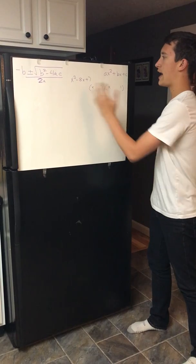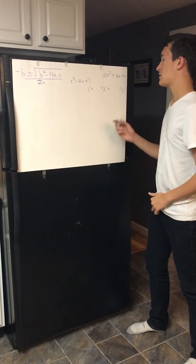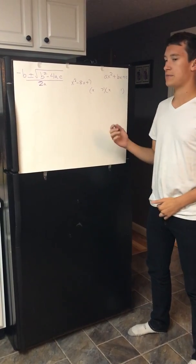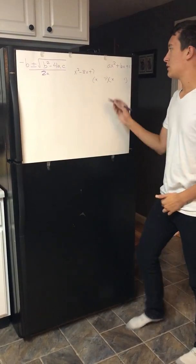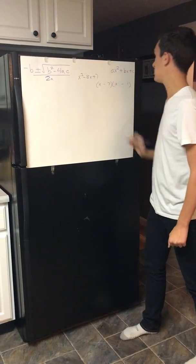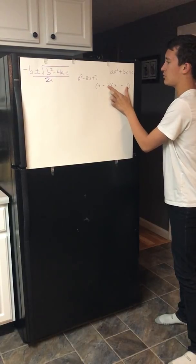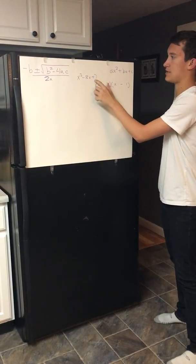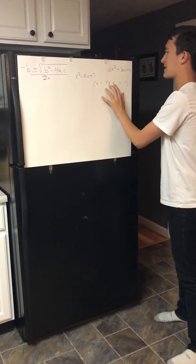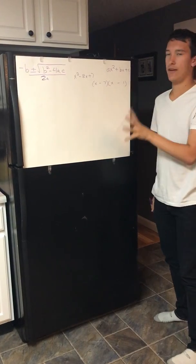So now you've got to add to negative 8. So the key is a negative times a negative equals a positive. So you have to have two negatives. Once these two negatives multiply, they add to a positive 7. But with negative 7x and negative 1x, they add to negative 8.